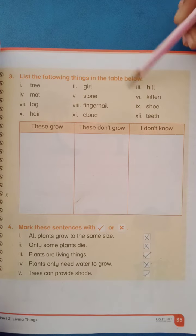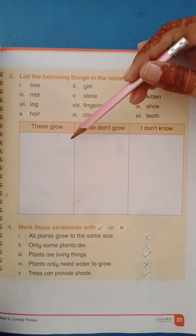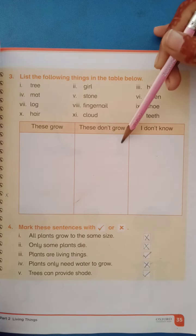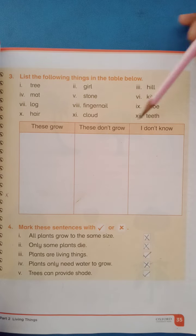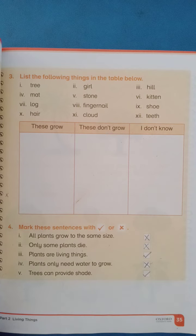Yahan pe kuch things di gayi hain. Aapko unko arrange karna hai: is column mein woh cheezein likni hain jo grow kar sakti hain, is column mein woh cheezein jo grow nahi kar sakti, aur is column mein woh cheezein jinke baare mein aapko pata nahi ke woh grow karti hain ya nahi. Okay students, let's do this exercise on book page number 35.